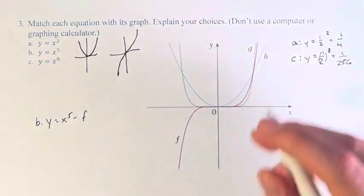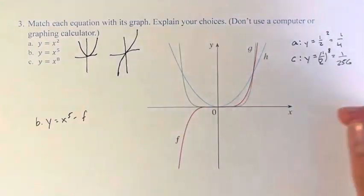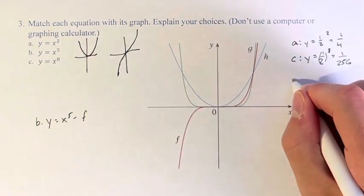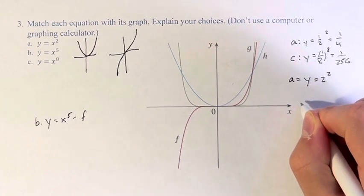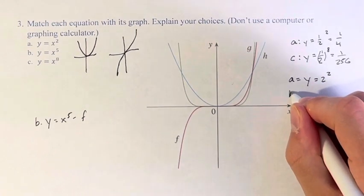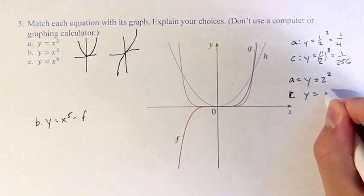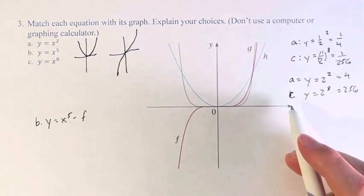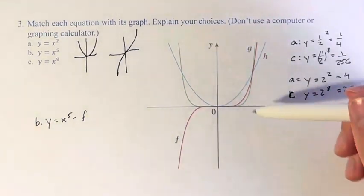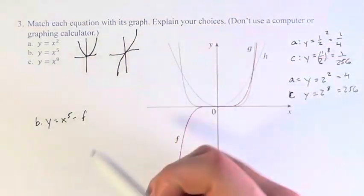Well, let's go to x equals two. Therefore, y would be equal to two squared for a. And for c, y would be equal to two to the eighth. In this case, we can see that c is larger. So if c is smaller at first and larger later on, we expect that to be g.